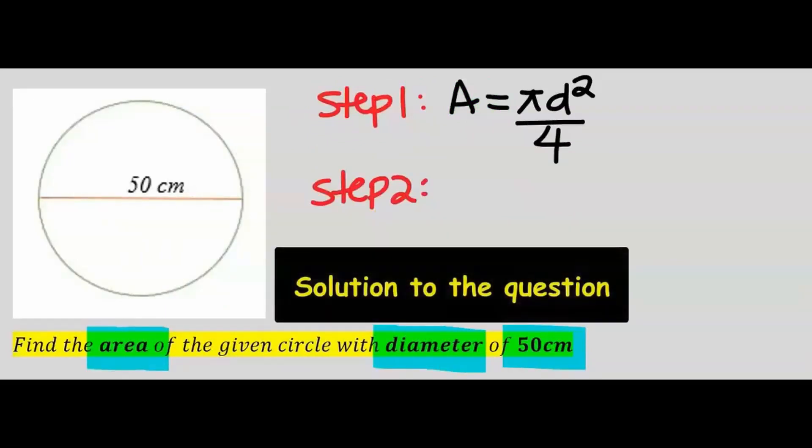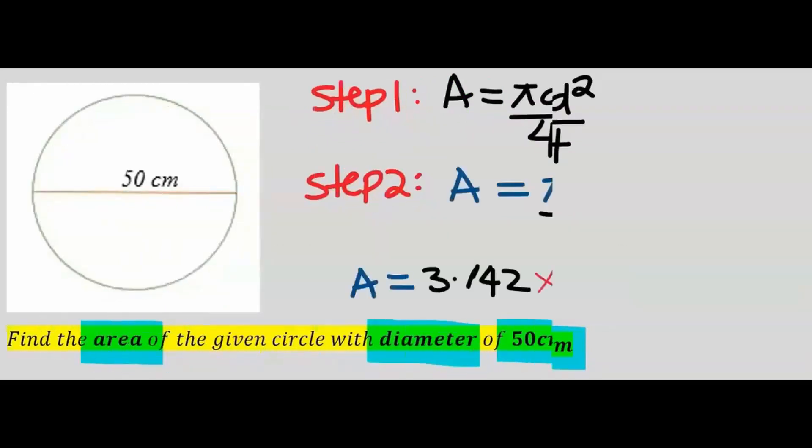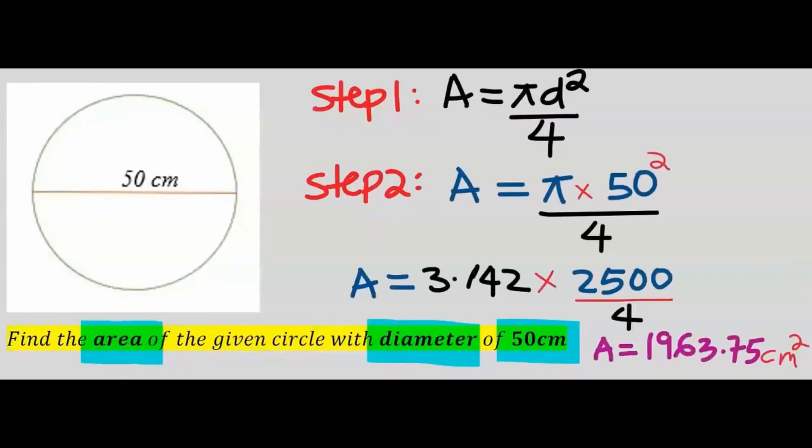After writing out the formula, the next step is to substitute. The area of this circle is 1963.7...